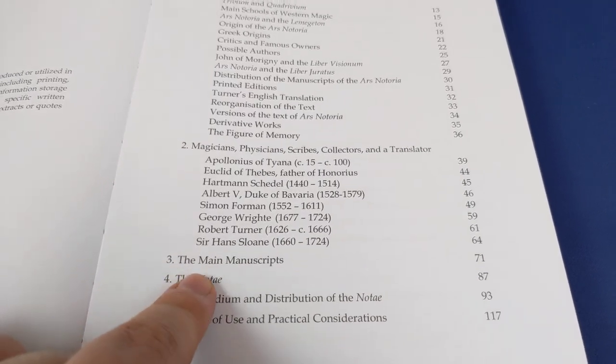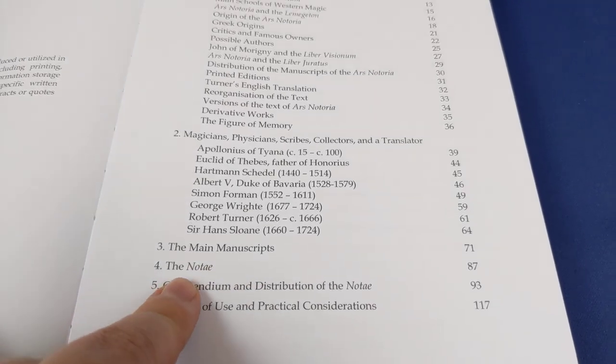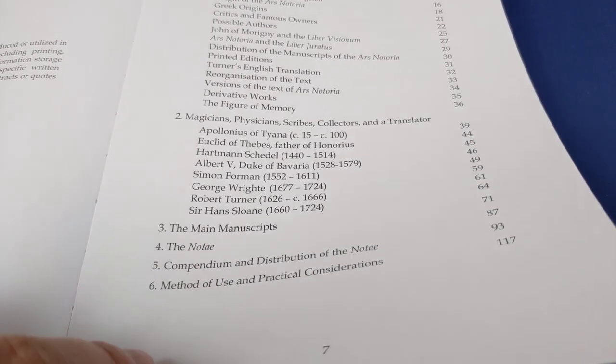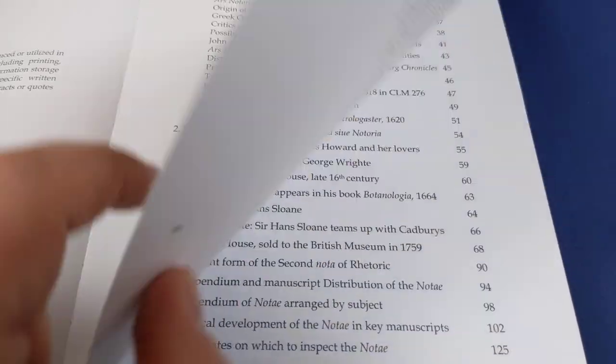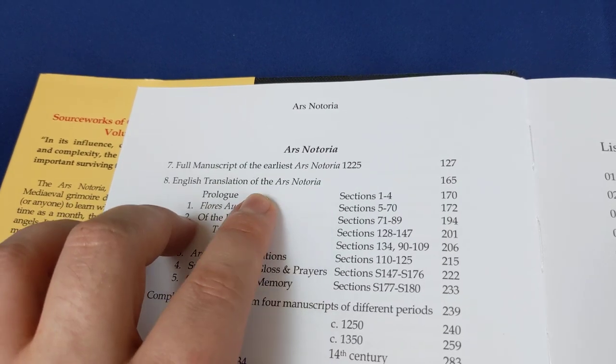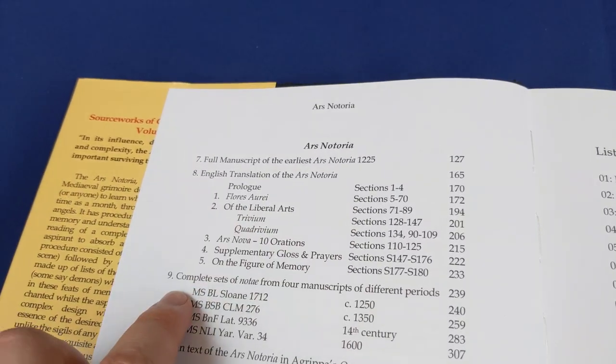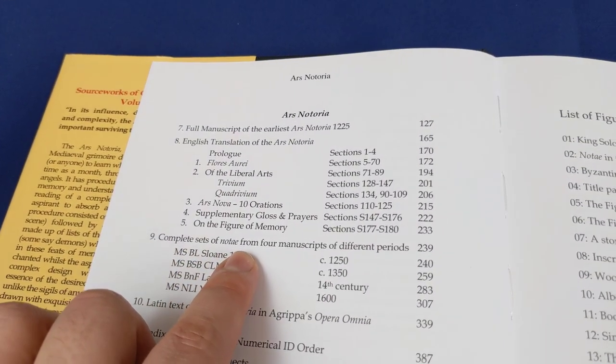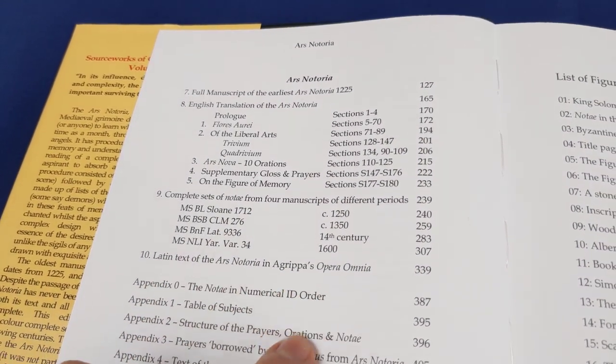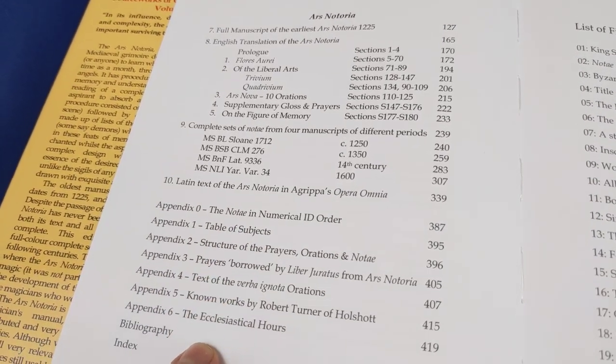Then talking about the main manuscripts, which ones exist and so on. Talking about the nature of the notae, compendium distribution of the notae, method of use and practical considerations. Then you get the full manuscripts as I've shown you, and then the English translation, all transcribed as well. And then complete sets of notae from four different manuscripts of different periods. You get the Latin text and these appendices.